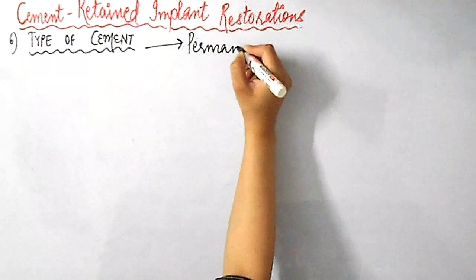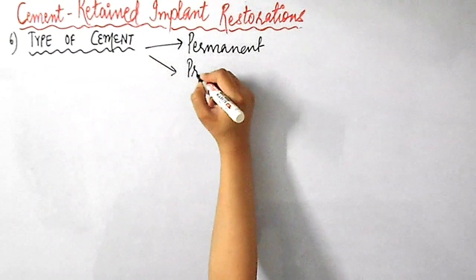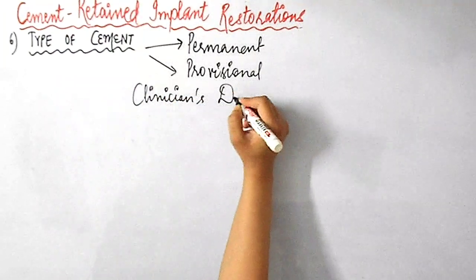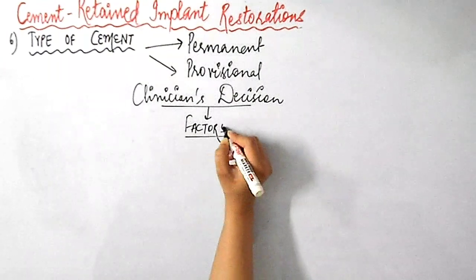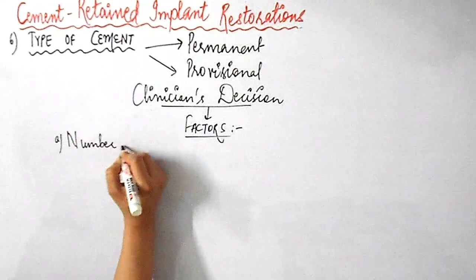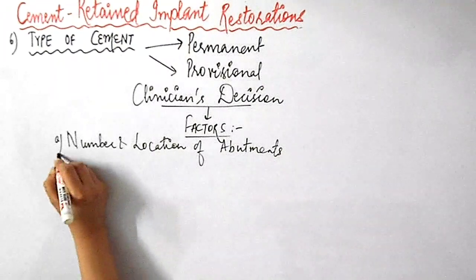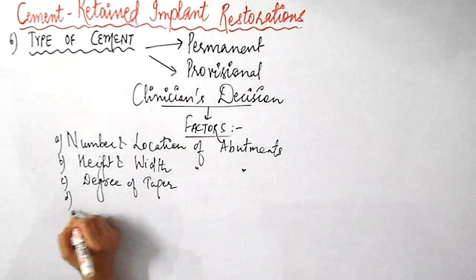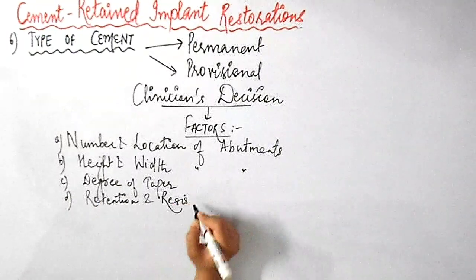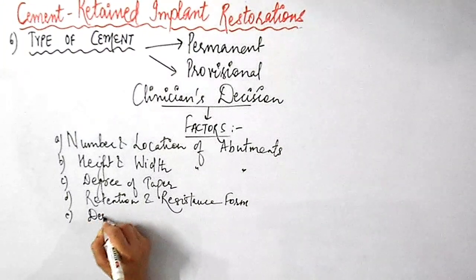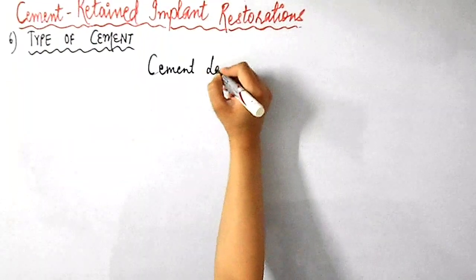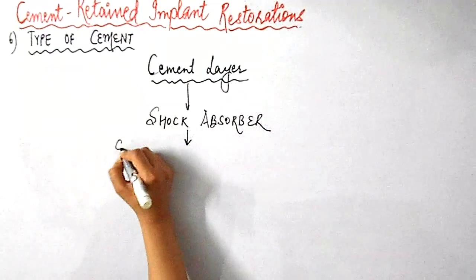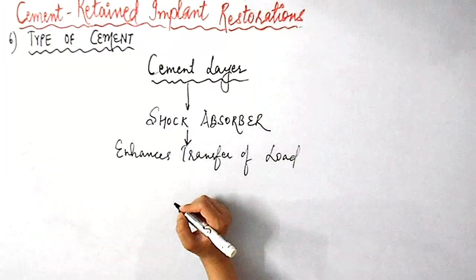The last factor influencing retention is the type of cement used. The cement used with implant restorations can either be permanent or provisional, and it is the clinician's decision to choose a certain type of cement based on the clinical situation, analyzing factors like the number and location of abutments, height and width of the abutment, degree of taper, retention and resistance form, and the design of the abutment. The cement layer also acts as a shock absorber by enhancing the transfer of load throughout the prosthesis-implant-bone system.